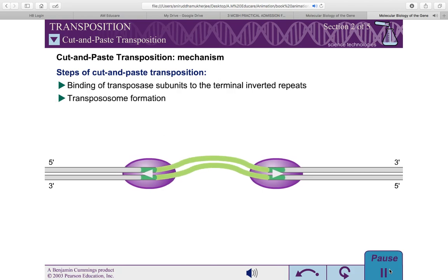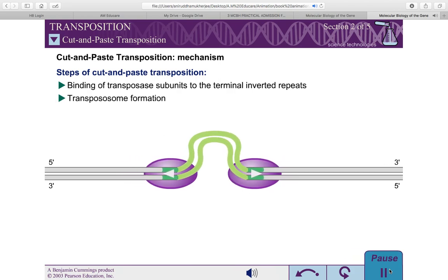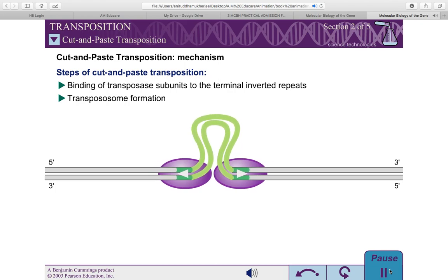Once the transposase subunits recognize these sequences, they bring the two ends together to generate a stable protein-DNA complex called a transpososome, or synaptic complex.